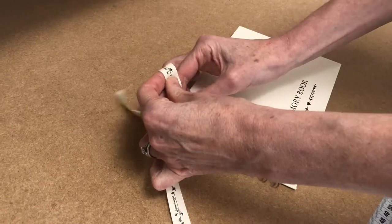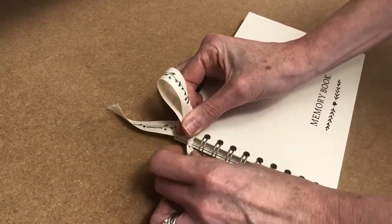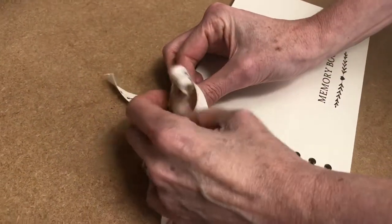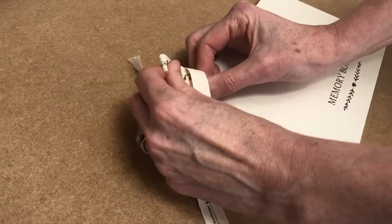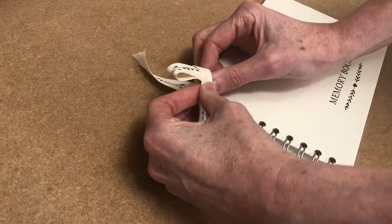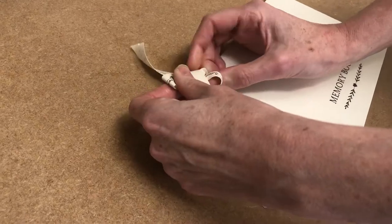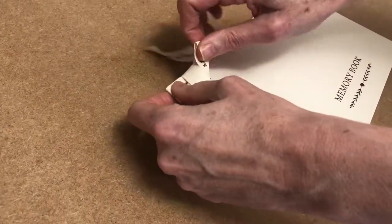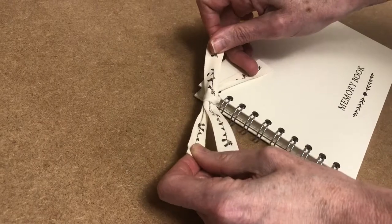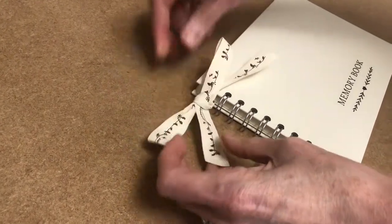Take the right hand end and make a loop. Then take the left hand end and wrap it around so that the bit wrapped around is the unprinted side of the ribbon. Then when you tuck it through, the printing will be visible on all sides.